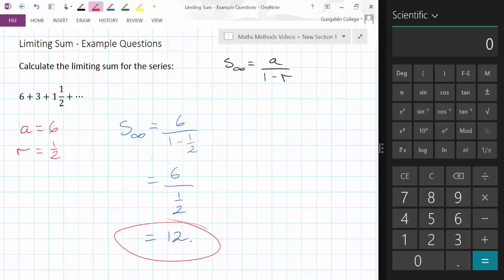It's the upper threshold that we can't pass as far as this sum goes. If you keep adding these terms you will not get past 12. That is the limiting sum for this series. Let's go.